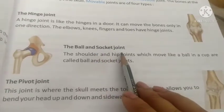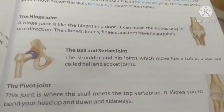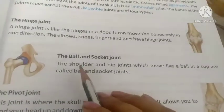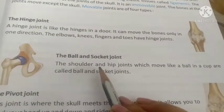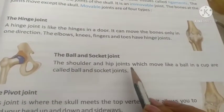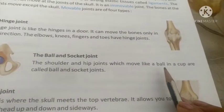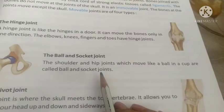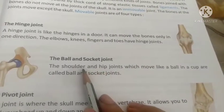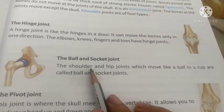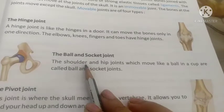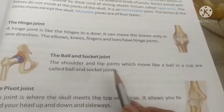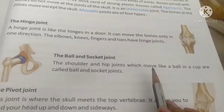The ball and socket joint — the shoulder and the hip joint — moves like a ball in a cup. The shoulder and hip joints are called ball and socket joints. This joint can also move in more than one direction.